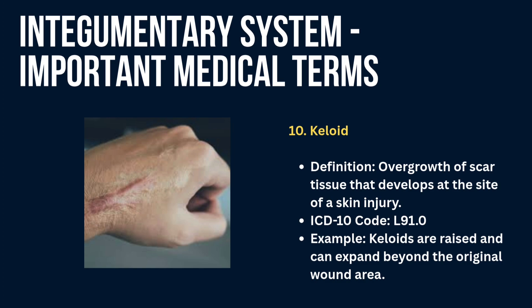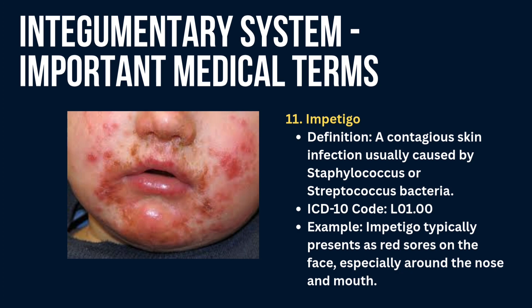Next is impetigo — a contagious skin infection usually caused by Staphylococcus or Streptococcus bacteria. Example: impetigo typically presents as red sores on the face, especially around the nose and mouth.